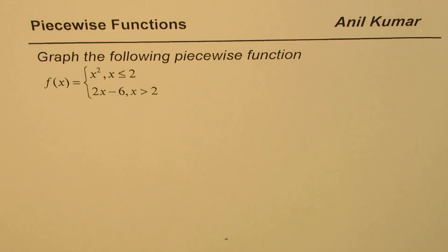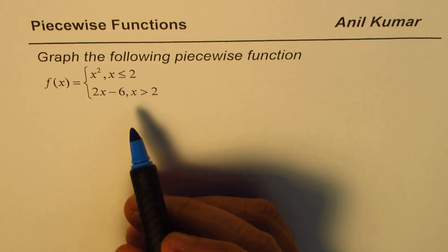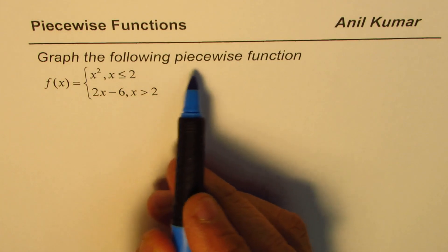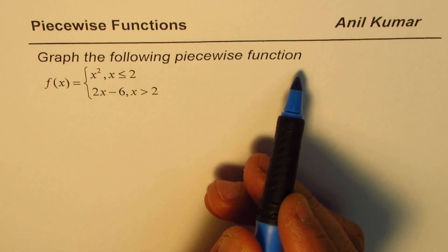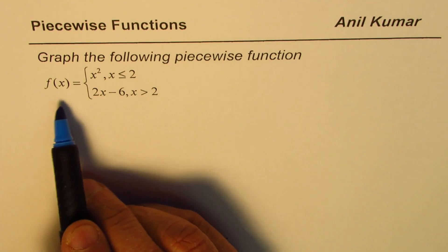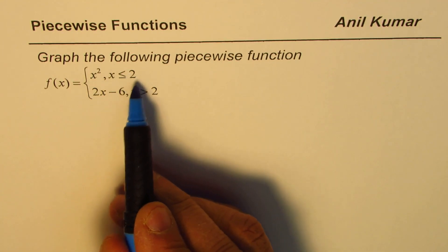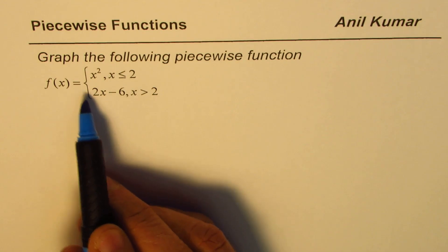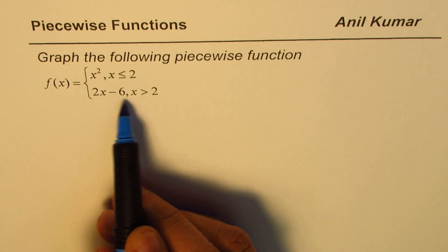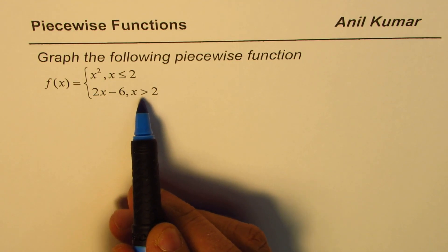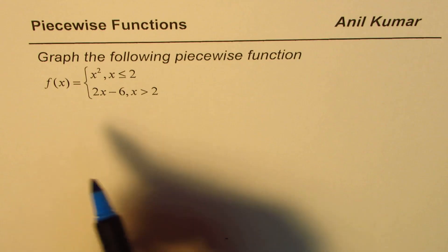I'm Anil Kumar and in this video we will understand how to sketch a piecewise function. We have taken an example: graph the following piecewise function. f(x) equals x squared when x is less than or equal to 2, and it equals 2x minus 6 when x is greater than 2.